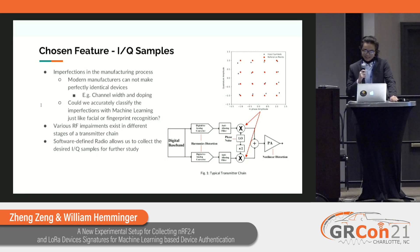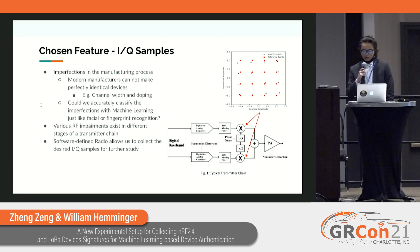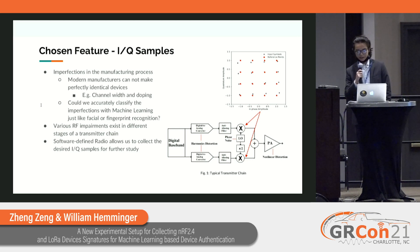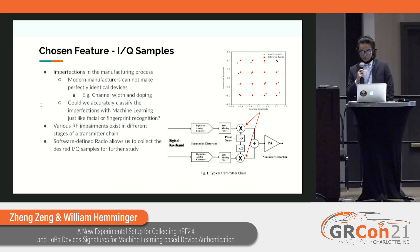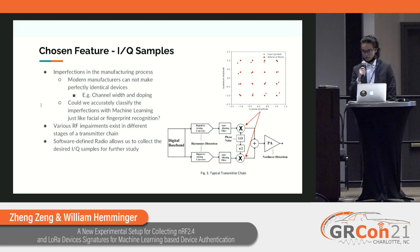No perfectly identical ICs can be made even with modern manufacturing technology — the question is, could we classify them? Looking at the figure at the lower right, for a typical transmitter chain you can see various RF impairment sources exist at different stages. There is harmonic distortion in the digital-to-analog converter, non-linear distortion in the power amplifier, and most importantly IQ imbalance due to phase or amplitude error in the quadrature signal. We should be able to collect and classify this information using a similar approach as facial or fingerprint identification, with the help of neural networks or other machine learning techniques.